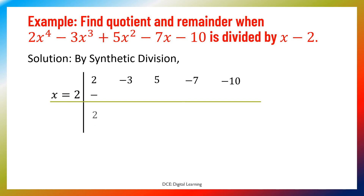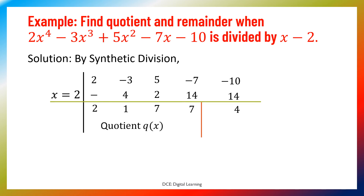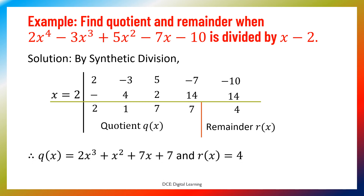First, we bring down 2 as it is. Then we multiply 2 and 2, write 4 below minus 3. Now, minus 3 plus 4 is 1. We multiply 2 and 1, write 2 below 5. 5 plus 2 is 7. Multiply 2 and 7, write 14 below minus 7. Minus 7 plus 14 is 7. Multiply 2 and 7, write 14 below minus 10. Minus 10 plus 14 is 4. We draw a line leaving the last number. The numbers 2, 1, 7, 7 become the coefficients of the quotient, and 4 becomes the remainder. Therefore, q(x) equals 2x cubed plus x squared plus 7x plus 7, and the remainder r(x) equals 4.